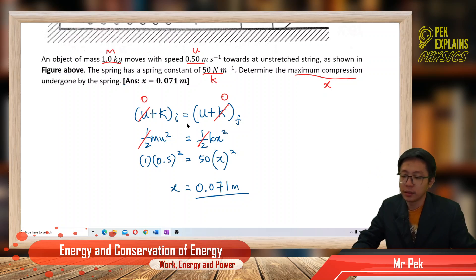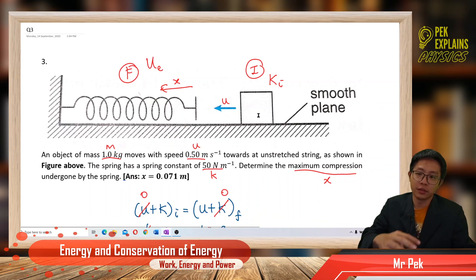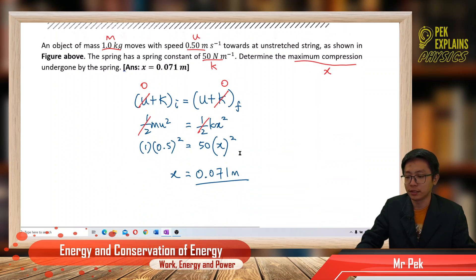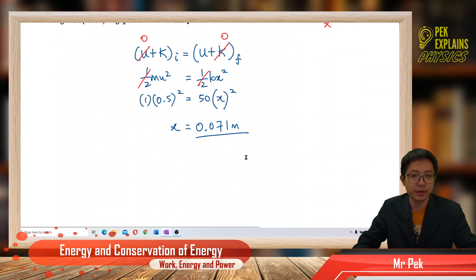That's the compression resulting from elastic potential energy in the spring. The kinetic energy of the block changed to elastic potential energy in the spring. That's it for this question. Let's move on to the next question. Thank you.